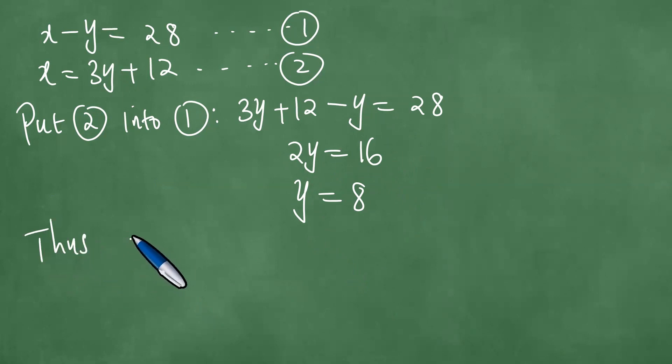Thus, we are interested in getting x. So x is 3y plus 12, which is 3 times 8 plus 12, which means that we have exactly 24 plus 12, which is exactly 36.